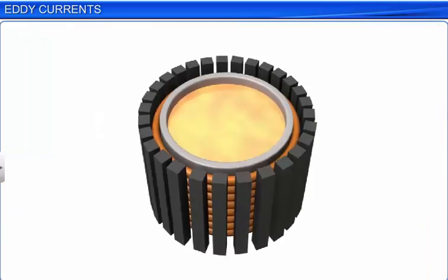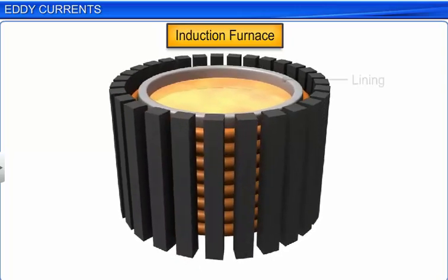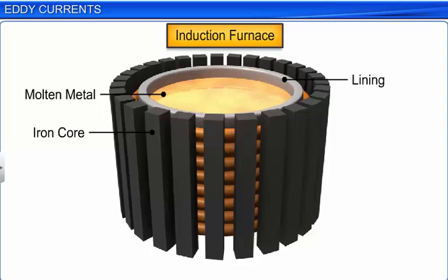Certain galvanometers have a fixed core made of a non-magnetic metallic material. When the coil oscillates, the eddy currents generated in the core oppose the motion and bring the coil to rest quickly.